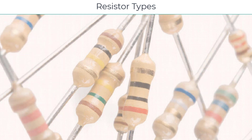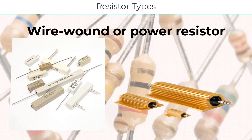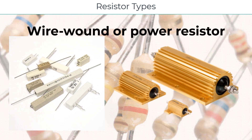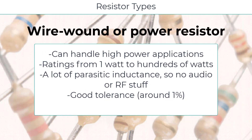For applications that draw a lot of power or current, you might need to use a wire-wound resistor, also known as a power resistor. These are made by wrapping wire around an insulating core and are generally used in applications requiring low resistance values. Because of this, the current and therefore the heat and power dissipated are high. Power resistors are common in power supplies and other equipment where lots of power needs to be dissipated. They come in power ratings from one watt to hundreds of watts. Some even have a heat sink. They have a lot of parasitic inductance, so they're not good for audio or RF circuits. They typically have a good tolerance of plus or minus 1%. You probably won't be using too many of these with your Arduino projects.